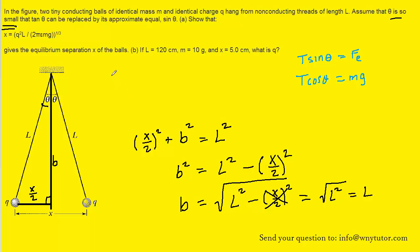So if we return back to this angle, we could say that the tangent of that angle is equal to the opposite side, which is x over 2, divided by the adjacent side, which we marked b, but we just solved for b and found that it was roughly l. And then, of course, if we do a little algebra here, we would have x over 2l.